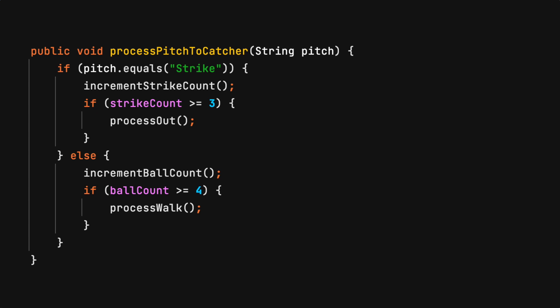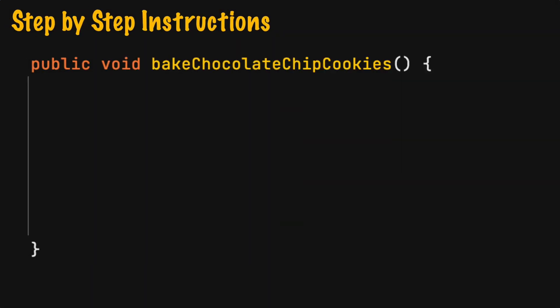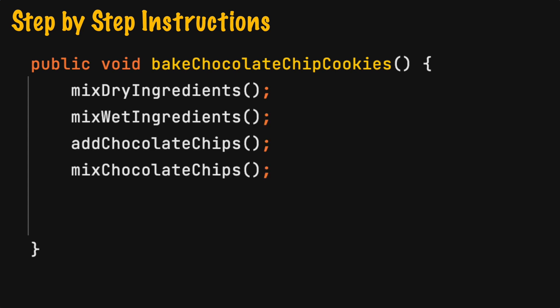If the true or false code block executes more coding statements, this may be an indication that more than one thing is happening. Step-by-step instructions are a series of method calls needed to perform a multi-step process. Each method will do a single task; all the methods combined will perform a single larger task.